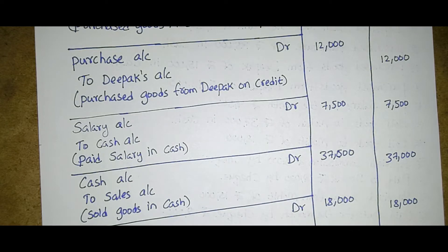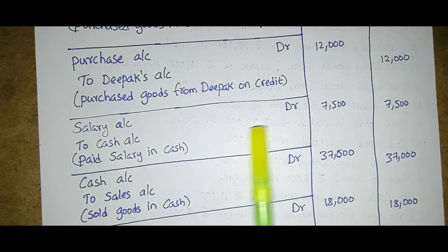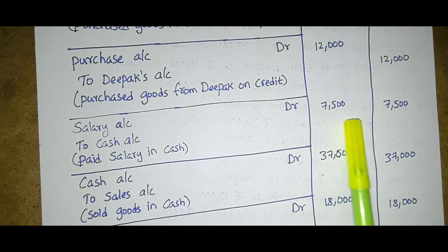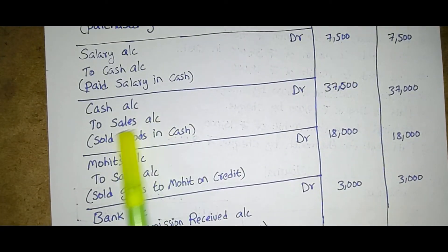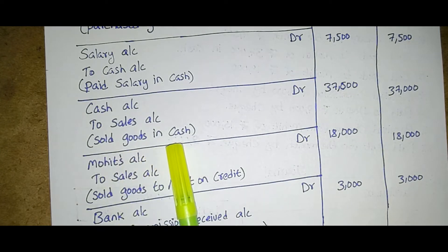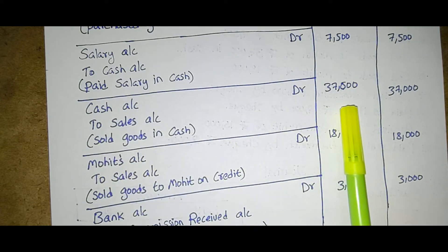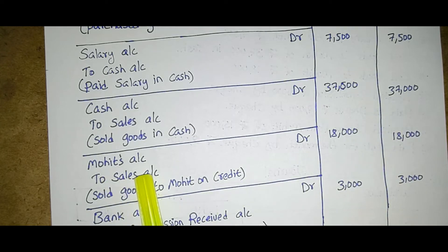Based on the information and availability of data in the problem, we are preparing the journal. Salary account Dr. to cash account — paid salary in cash; seven thousand five hundred debit and seven thousand five hundred credit. Cash account Dr. to sales account — sold goods in cash; thirty-seven thousand debit and thirty-seven thousand credit.